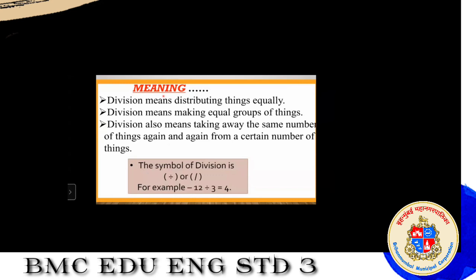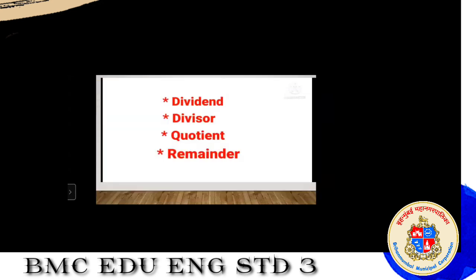Now, the symbol of division — there are two types of symbols. The first one: for example, 12 divided by 3, written with the division sign, gives the answer 4. While solving divisions, you should know the terms: dividend, divisor, quotient, and remainder.